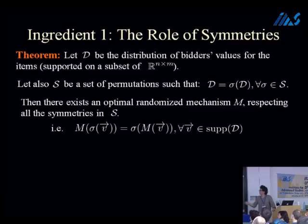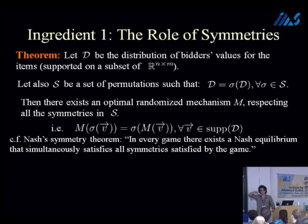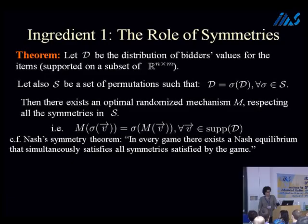The result is that if S is the set of permutations satisfied by the value distribution, then there exists an optimal randomized mechanism that respects all the symmetries simultaneously. In particular, if I give the mechanism a permutation of a value vector, all I observe in the output is the permutation of the output of the mechanism if I plug in V. My intuition for this theorem is Nash's symmetry theorem: in every game, there is a Nash equilibrium that simultaneously respects all symmetries that may exist in the game. The symmetry of the mechanism is linear — you just average it.